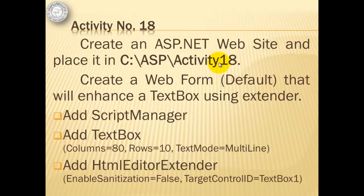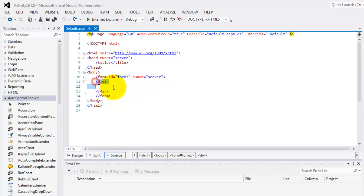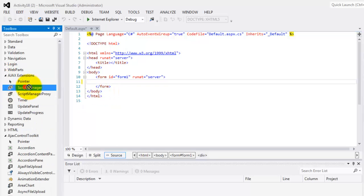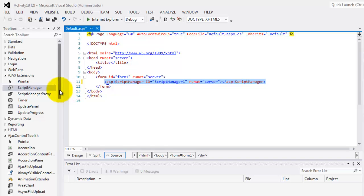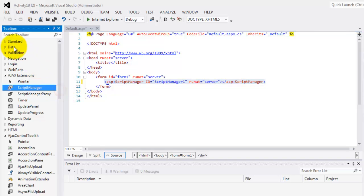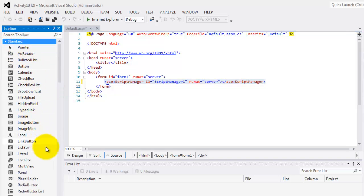Since we've already created our website and the default web form, we'll continue by adding a text box and an extender. We will start with adding a script manager, then the text box, then the HTML editor extender. We'll just delete the div, then go to AJAX Extension for the script manager, and then the standard toolbox for the text box.